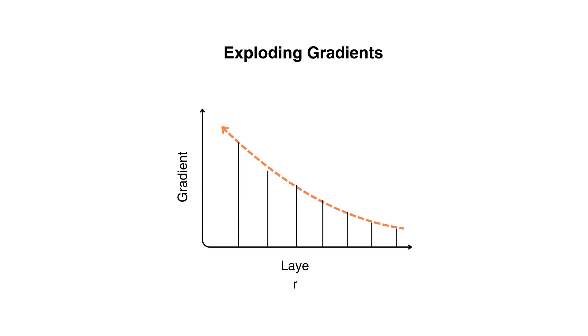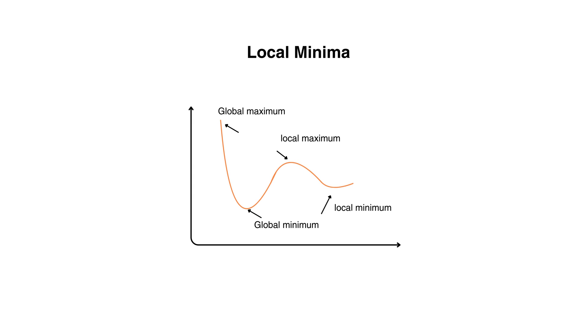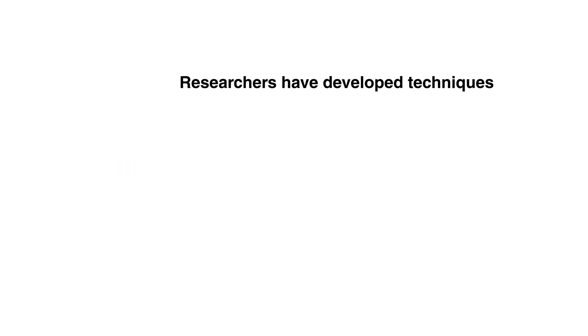Second is exploding gradients, which is the opposite of vanishing. Gradients become too large, making the training unstable. Third is local minima. The algorithm might get stuck in a sub-optimal solution, not the best one. Researchers have developed techniques to tackle these, like using rectified linear unit activation functions, batch normalization, and better optimizers like Adam.